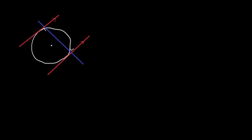The information we're given is the equation of the circle: x² + y² − 8x + 4y + 7 = 0. The equation of our blue line is 2x + 3y − 6 = 0. The idea is to find the equation of our two tangents — the two red lines.